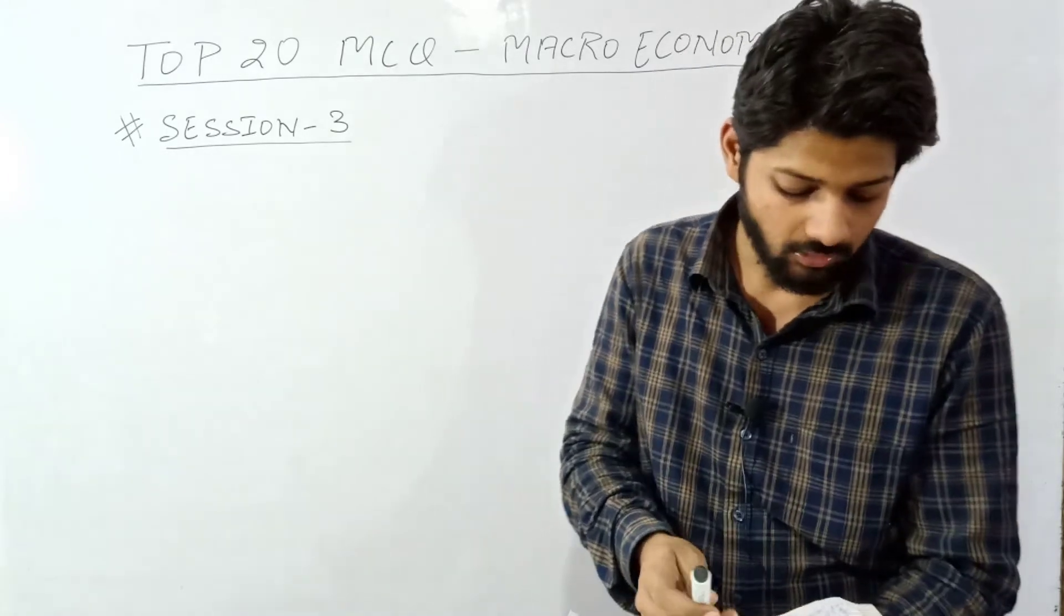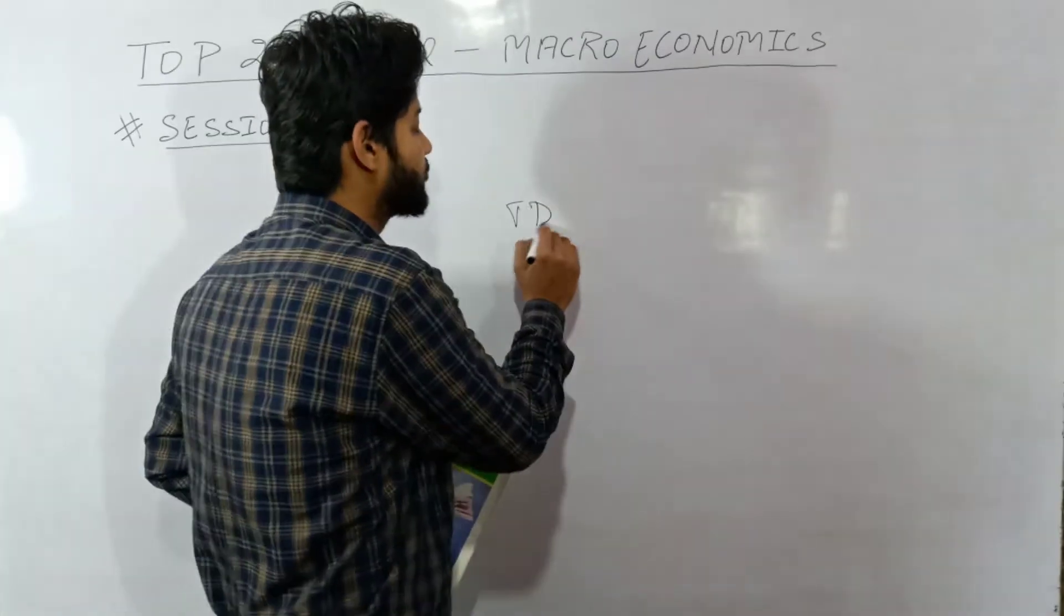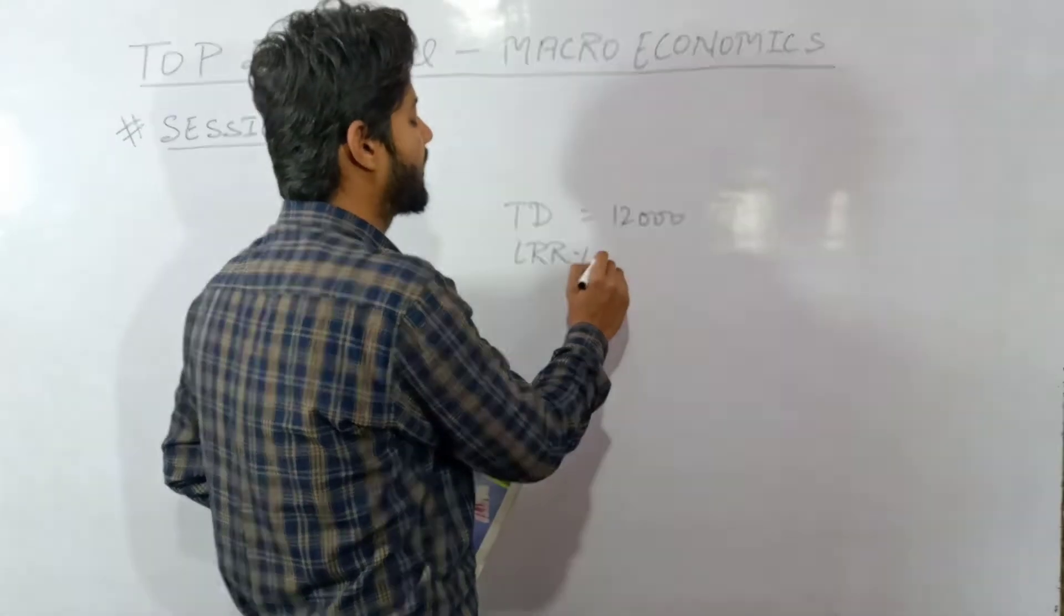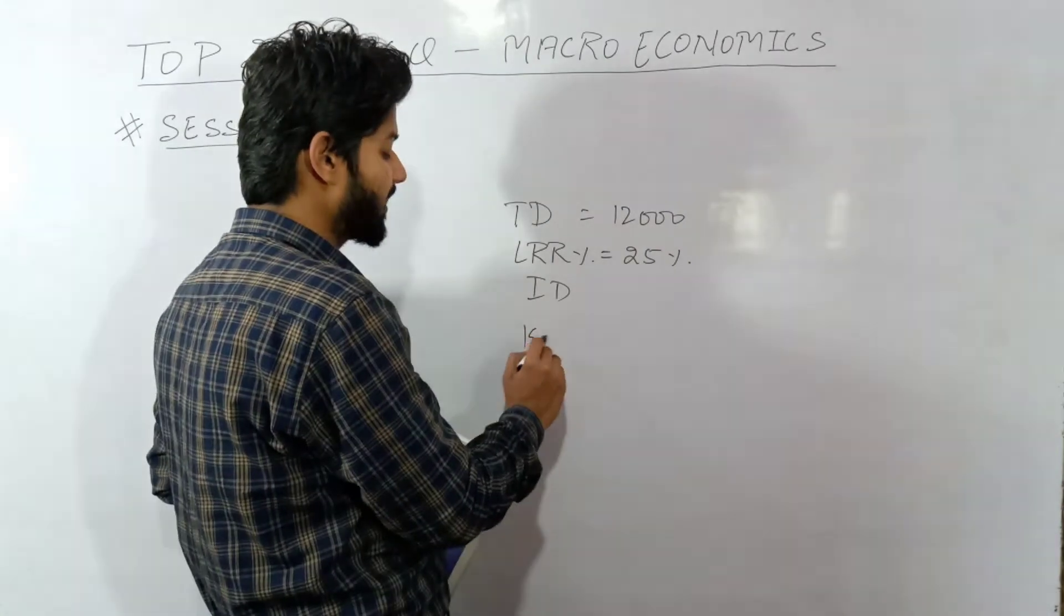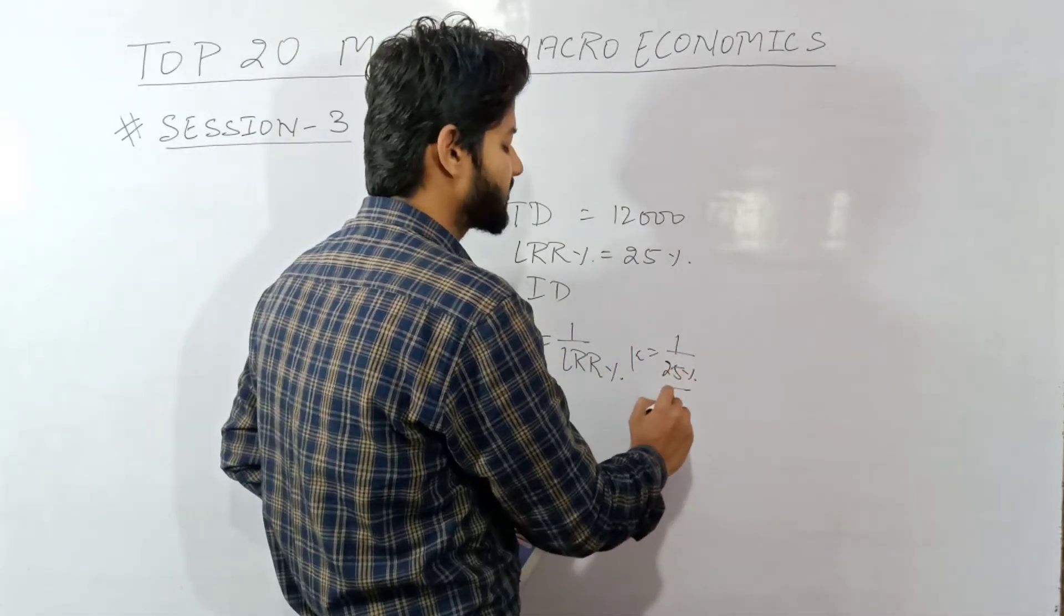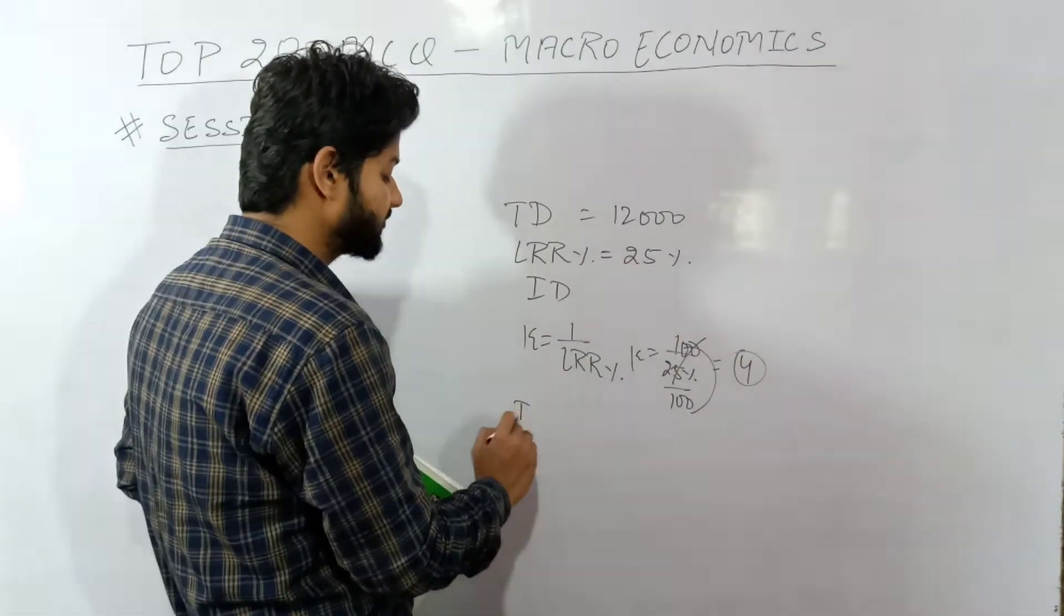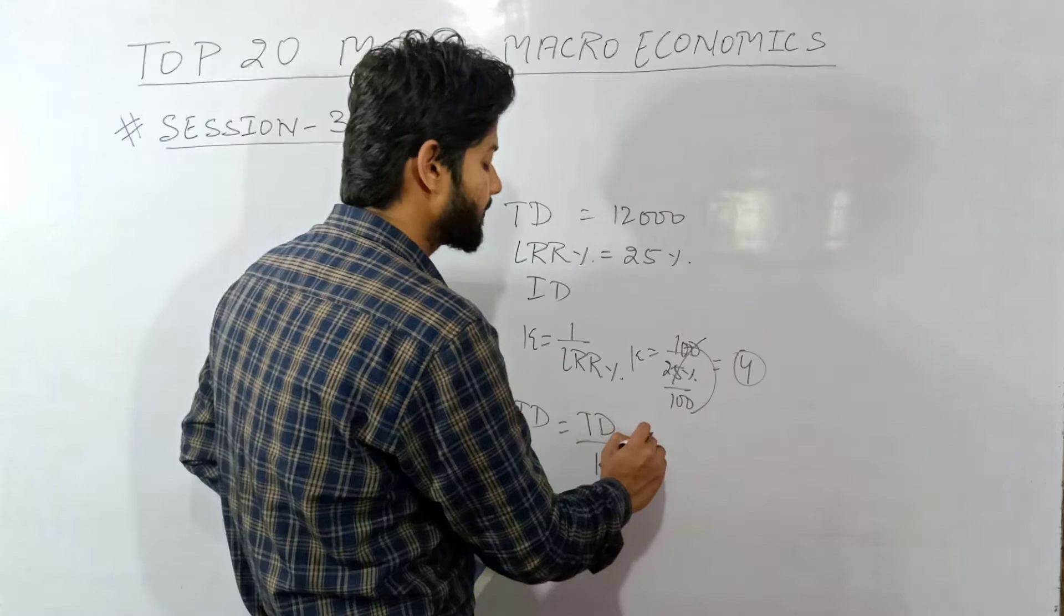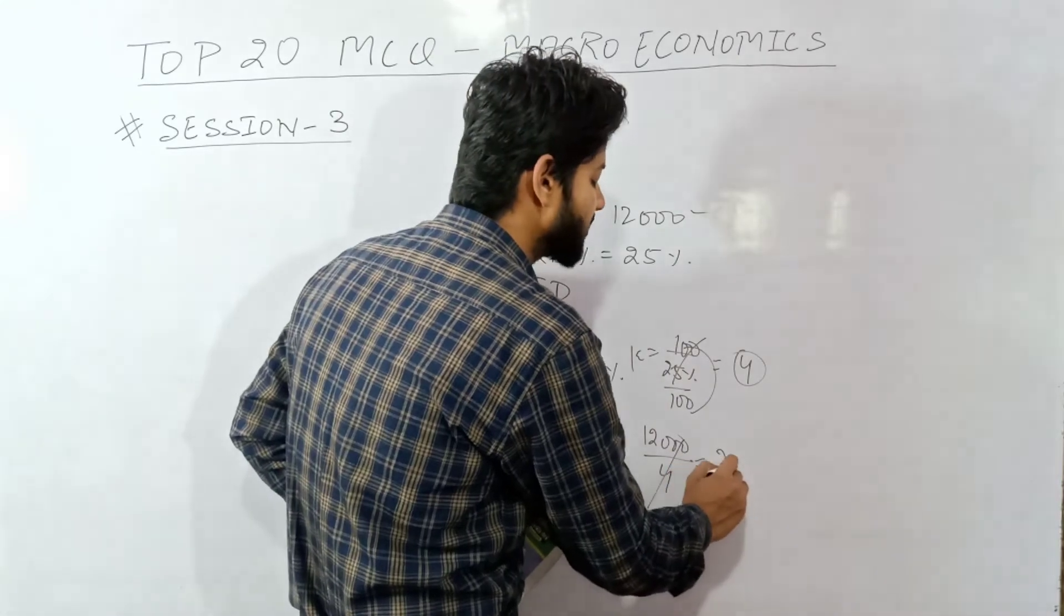Question number sixteen is a practical question. If total deposit of commercial bank is 12,000 and LRR percentage given is 25%, then find initial deposit. Multiplier formula is 1 divided by LRR percentage. K equals 1 upon 25%, which is 4 times multiplier value. Initial deposit formula is total deposit divided by multiplier. So 12,000 divided by 4 equals initial deposit value of 3000.